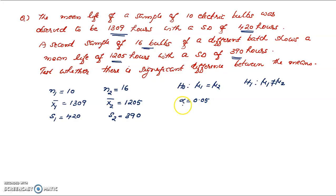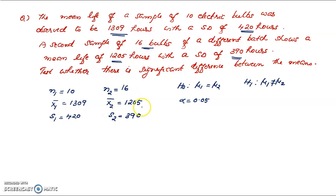Now we decide the test statistic. The population standard deviations are unknown and sample sizes are small — n1 is 10, n2 is 16. Since sigma1 and sigma2 are unknown and sample sizes are small, we use the t-statistic.